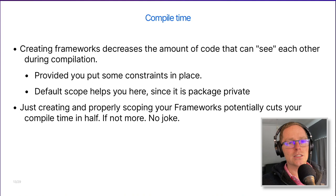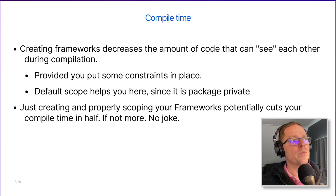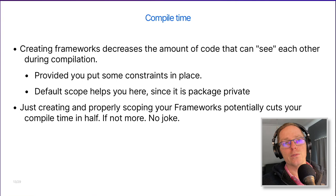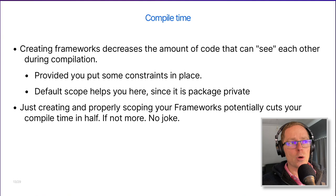You have to put some constraints in place to make sure the codebase can be split into separate frameworks. The default scope that you might have used is very nice in a framework setting because it is visible as if it's public within the framework, but outside of the framework it's not visible — so it's package-private really. Just creating and properly scoping your frameworks can already cut your compilation time in half, and I'm not joking — I've seen this happen on a large codebase in practice.